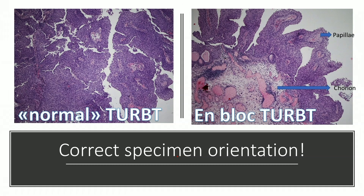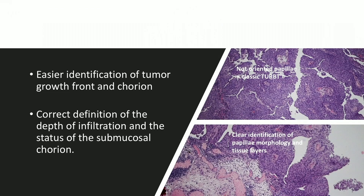Here are some pictures comparing normal TUR-BT and en-bloc. The first advantage is correct orientation — pathology knows where the base is and where the papillary side is. With classic TUR-BT, you resect and put everything together. If you are very accurate, you separate the base to identify the deeper part. But with en-bloc, this is achieved in one step — allowing easy identification of tumor growth from the corium, which is not possible with classic TUR-BT.